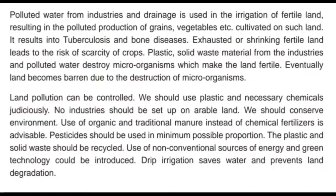When farmers use polluted or chemically infested water for their crop production, and we eat that crop in our day-to-day life, it leads to tuberculosis and bone diseases. The polluted water and waste material from industries mix with soil and kill the microorganisms which make the land fertile. Eventually the land becomes barren, and due to that there is less production of crops. Now let us see how we can prevent land pollution.